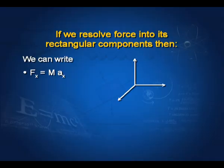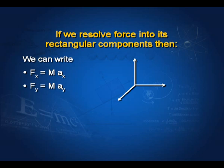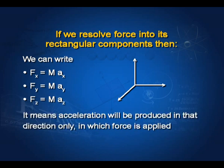Since acceleration and force are both vector quantities, if we resolve force into its rectangular components we can write: force along the x-axis, fx, equals mass into acceleration along the x-axis; similarly fy equals m·ay, and fz equals m·az. This means acceleration is produced only in the direction in which force is applied — if force is along the x-axis, acceleration is along the x-axis; if force is along the y-axis, acceleration is along the y-axis; and if force is along the z-axis, acceleration is along the z-axis.